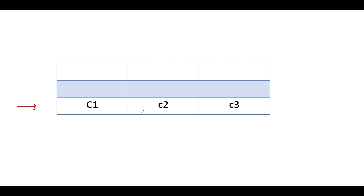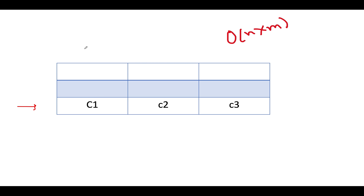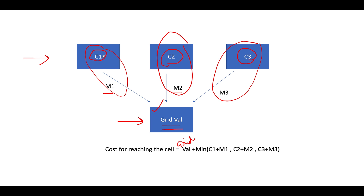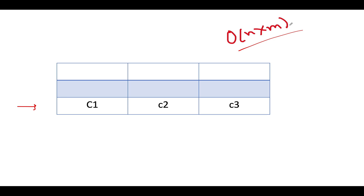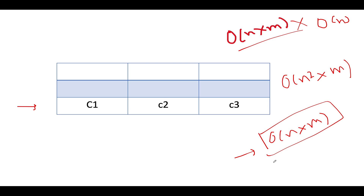The time complexity of this approach: the total number of cells is O(N×M), and for calculating the cost for each cell we need iterations equal to the number of columns, which is O(N). So the total time complexity is O(N²×M). The space complexity is O(N×M) because we are calculating the cost associated with each cell.